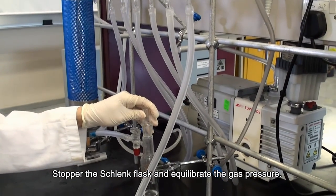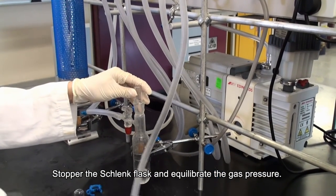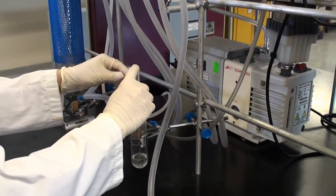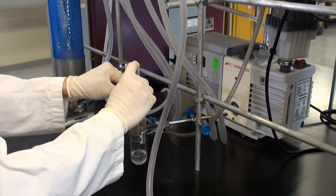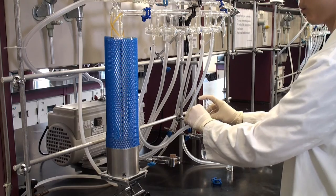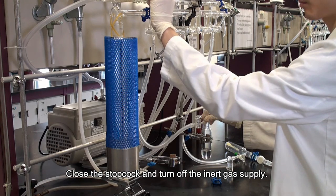Stopper the Schlenk flask and equilibrate the gas pressure. Close the stopcock and turn off the inert gas supply.